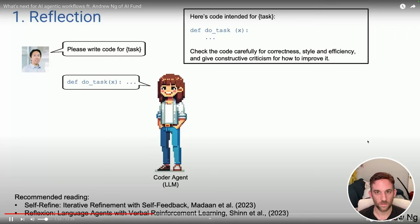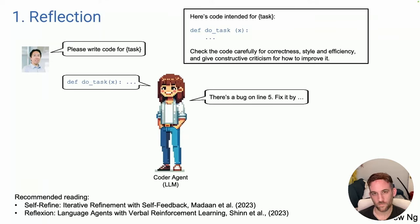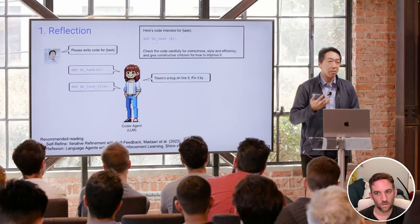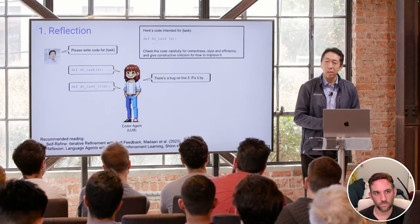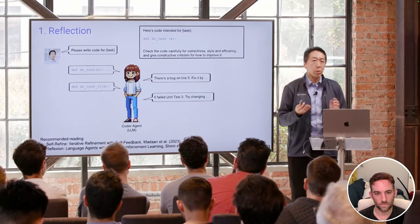It turns out the same LLM that wrote the code may be able to spot problems — like a bug in line five and how to fix it. If you take its own feedback and re-prompt it, it may produce a version two that works better than the first. It's not guaranteed, but it works often enough to be worth trying. You can also let it run unit tests, and if they fail, have a conversation about why and iterate further.